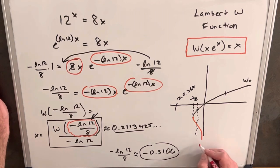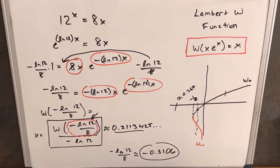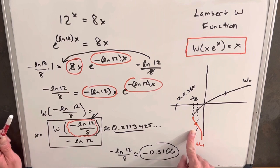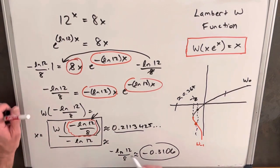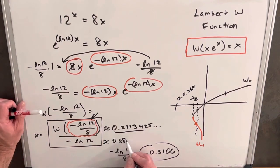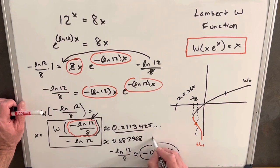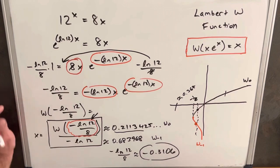But we're going to have this second answer on the negative 1 branch, and that's going to be about right here, because we get like two intersection points. And so on Wolfram Alpha, I looked that one up, and so our second solution is going to be approximately 0.683968. So this is from our negative 1 branch, and this is from our 0 branch. Two real solutions to the problem.